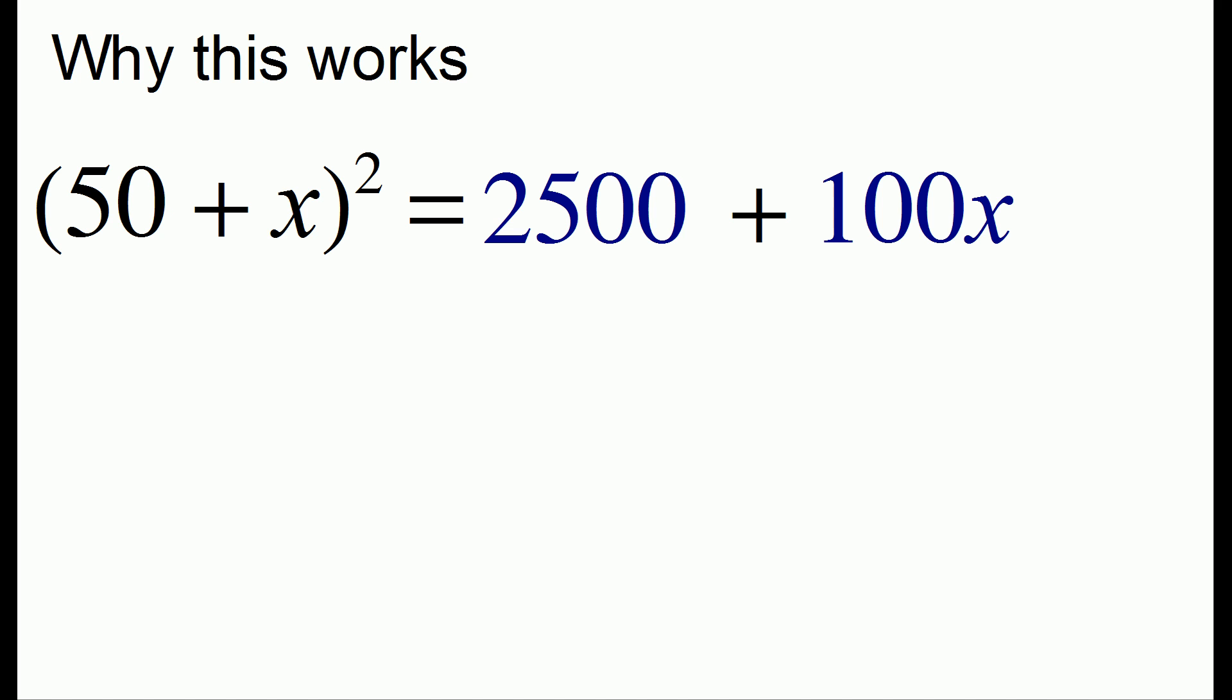I'm going to briefly explain why this trick works. When you square a number in the 50s, algebraically, that's the same as taking the quantity 50 plus x squared, where x is a digit from 0 to 9. If we expand this out, we end up with one term of 2,500. The middle term is 100x, and the remaining term is x squared.